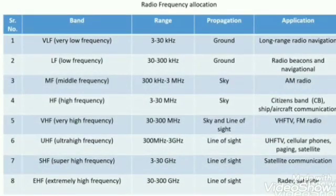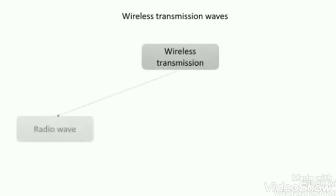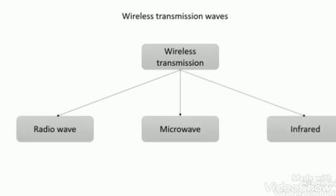In line of sight propagation, two antennas must be aligned in a straight line, and focusing the signal is very complex. Unguided transmission media can be classified into three types: radio waves, microwave, and infrared. These are also known as wireless or unbounded media.